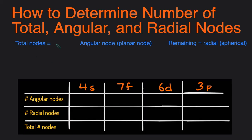The total number of nodes is going to equal the energy level minus one. The number of angular nodes, also called planar nodes, will always be fixed, and you can remember that by writing S, P, D, F: 0, 1, 2, 3. So S will always have zero planar nodes or angular nodes, P will always have 1, D will have 2, and F will always have 3.